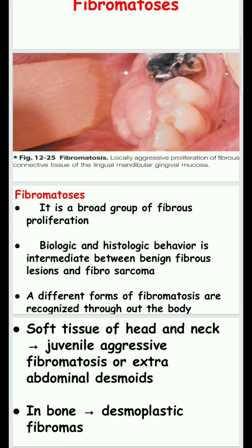For example, if there is cancer in the lungs, those cancer cells can transfer via blood to other tissue structures like kidney cells, leading to the formation of cancer — that is malignant. In the case of fibromatosis, it is intermediate between benign and malignant neoplasm.